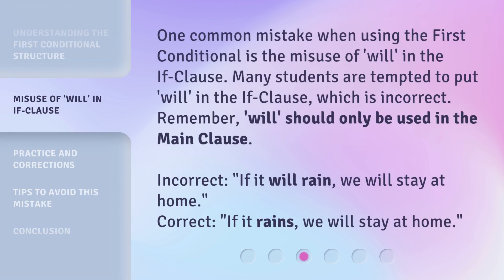One common mistake when using the first conditional is the misuse of 'will' in the if-clause. Many students are tempted to put 'will' in the if-clause, which is incorrect. Remember, 'will' should only be used in the main clause. Incorrect: 'If it will rain, we will stay at home.' Correct: 'If it rains, we will stay at home.'